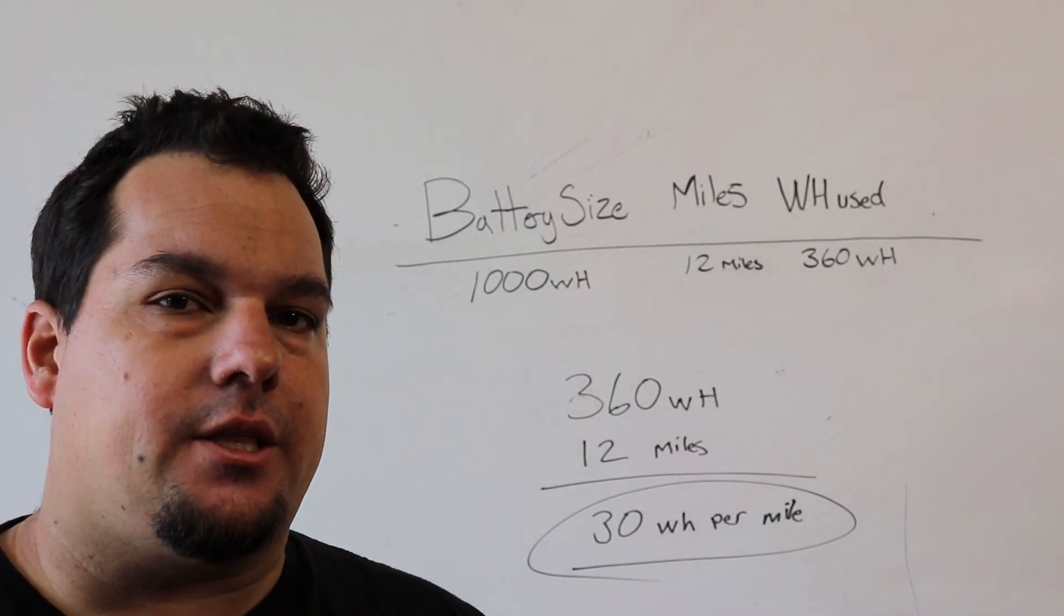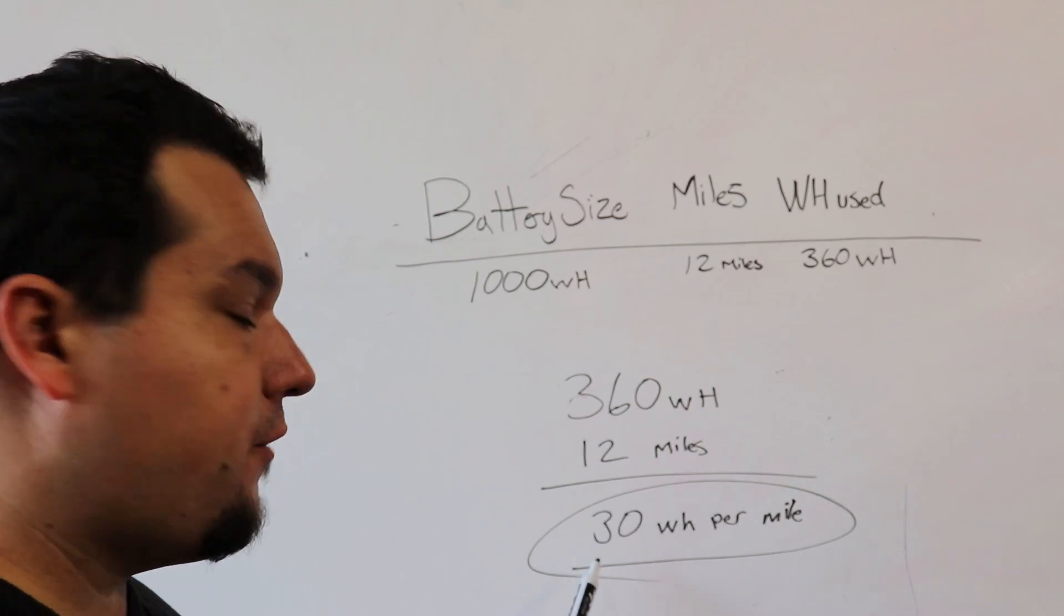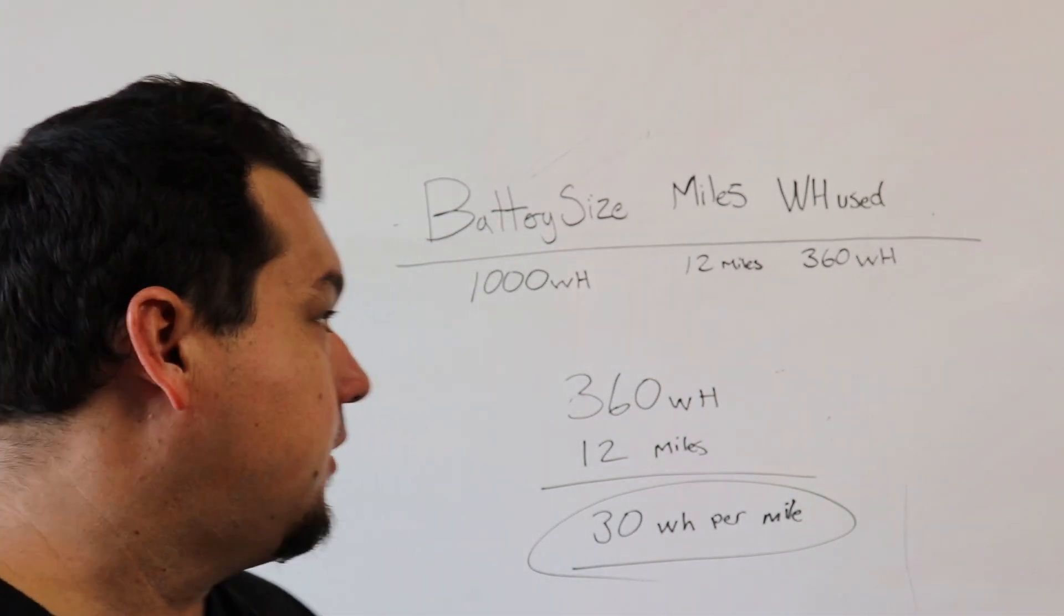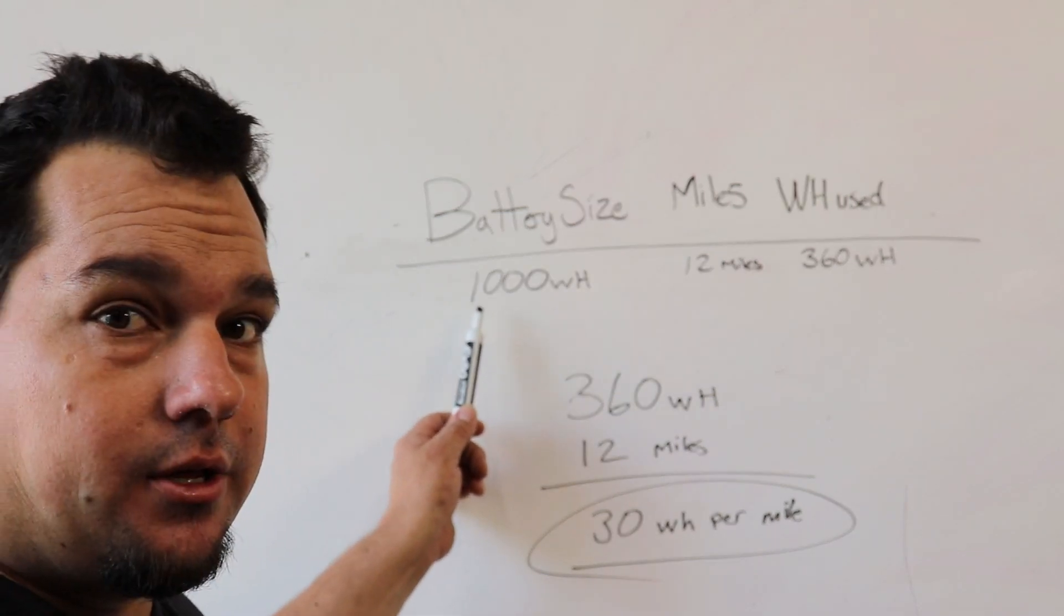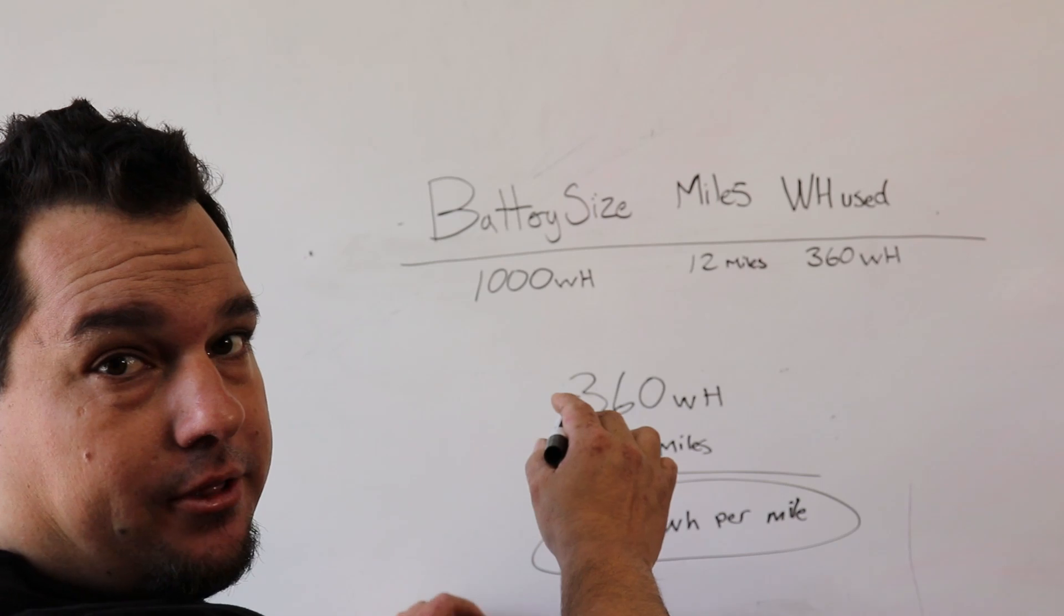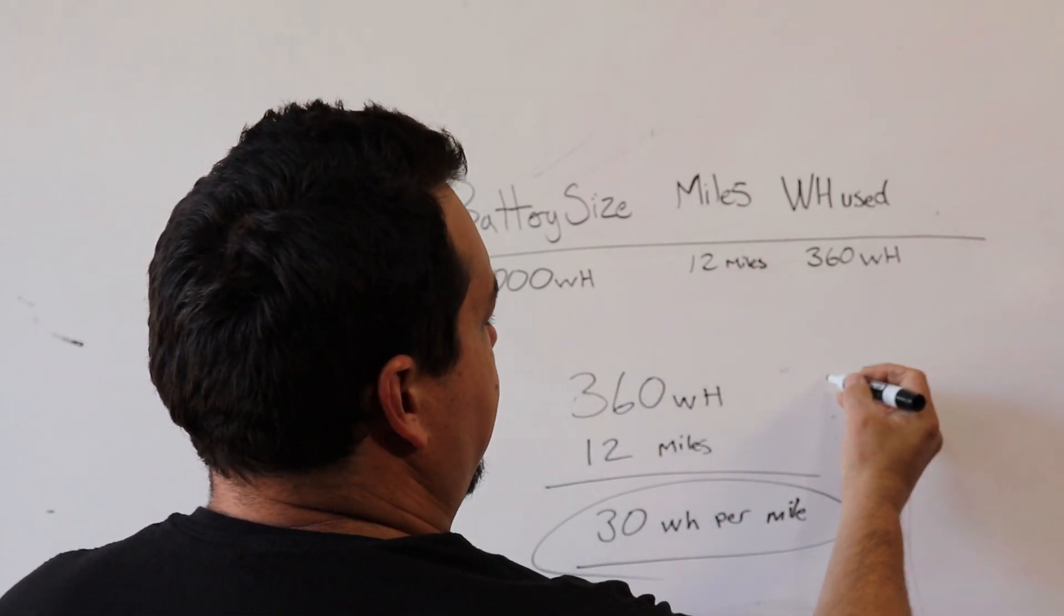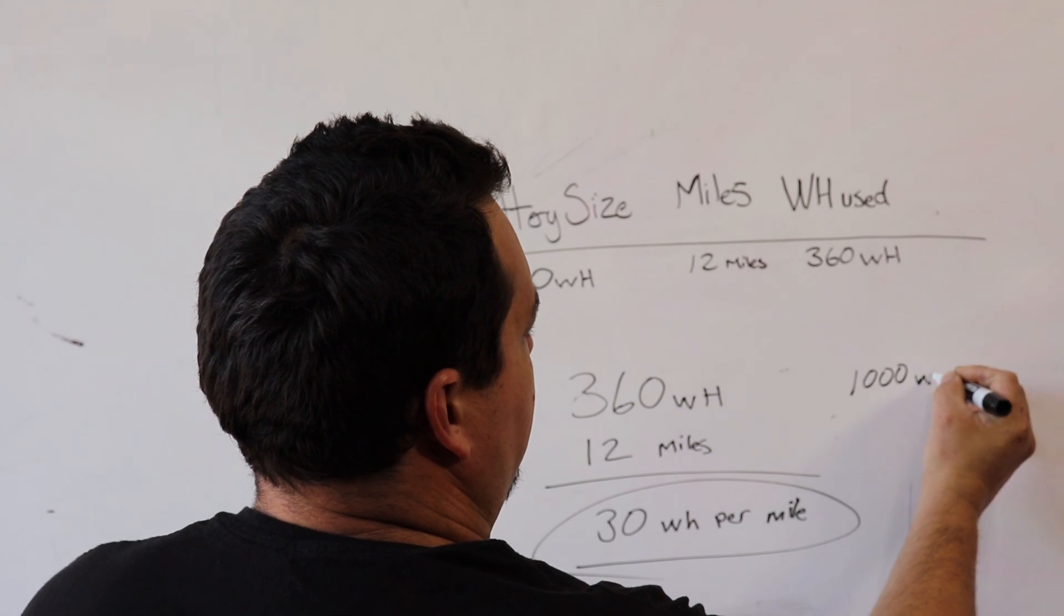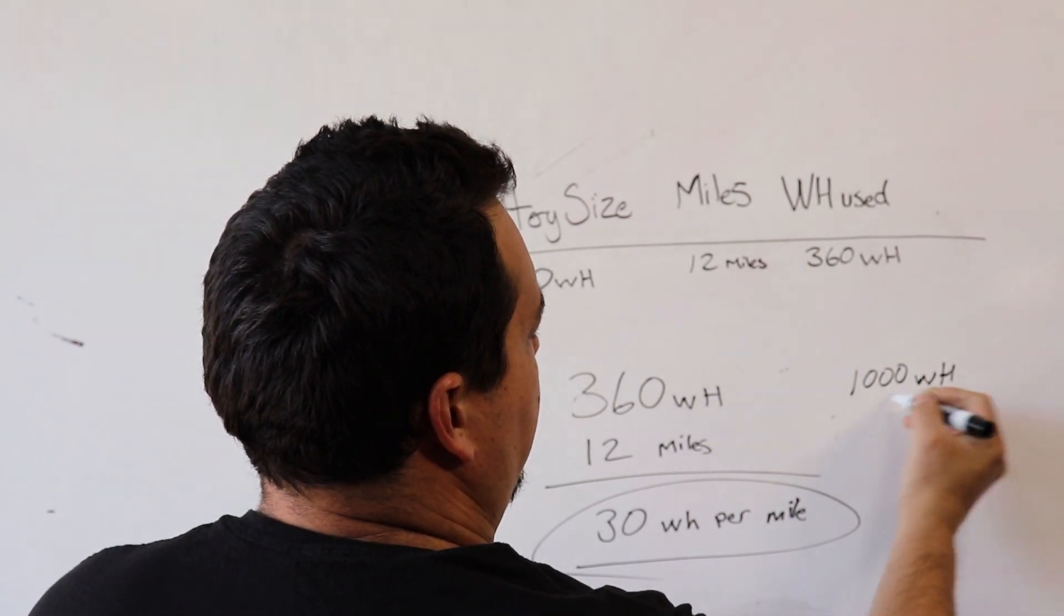So now we can take this and figure out exactly how much range that our battery pack is going to give us. Remember we started with a thousand watt hour battery pack. We take our thousand watt hour battery pack. So a thousand watt hour pack, that's how much we have in storage.